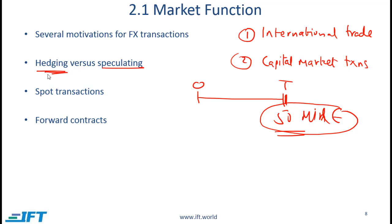This is an example of hedging because the company is hedging its foreign exchange risk, and we'll see examples of this over the next few slides. Speculation is where a company or an investor takes a position based on a view. If a given investor believes that the Japanese yen will appreciate, he might take a long position in the yen purely with the intent of benefiting if it goes up — that would be speculation. The distinction between hedging and speculation can be blurred, but understanding the high-level difference should be sufficient for the exam.